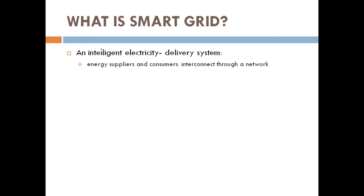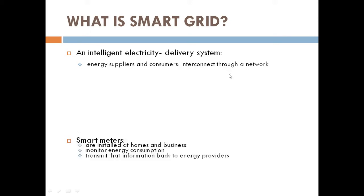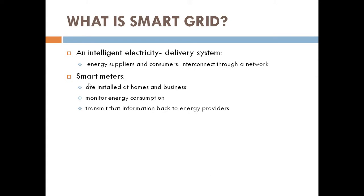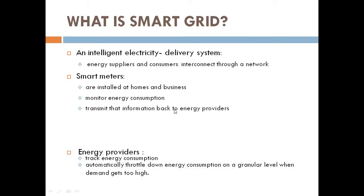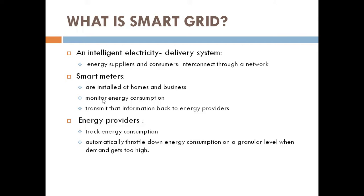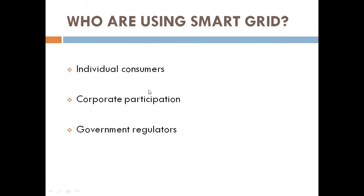It describes how energy suppliers and consumers interconnect through a network. There are smart meters installed at homes and businesses, and they monitor energy consumption and transmit that information back to energy providers. Energy providers then track energy consumption and automatically throttle down energy consumption on a granular level when demand gets too high.